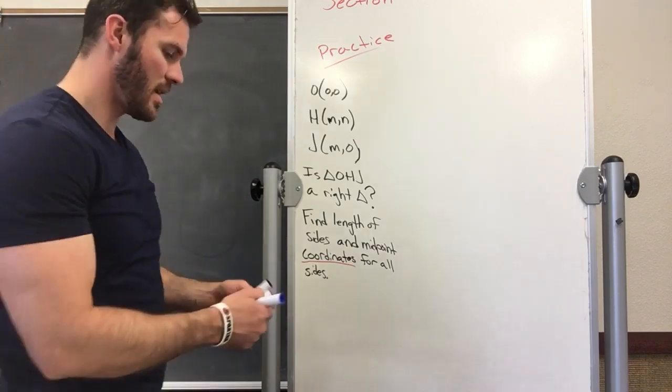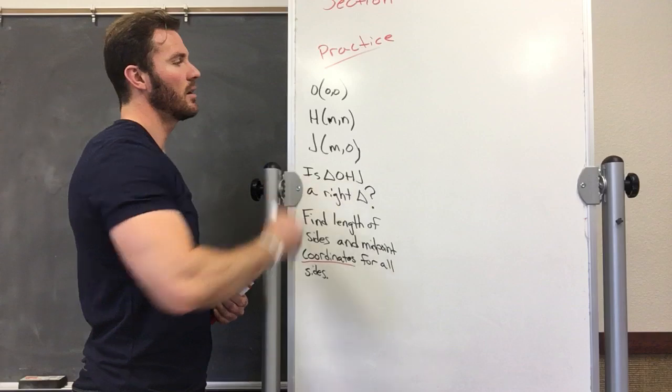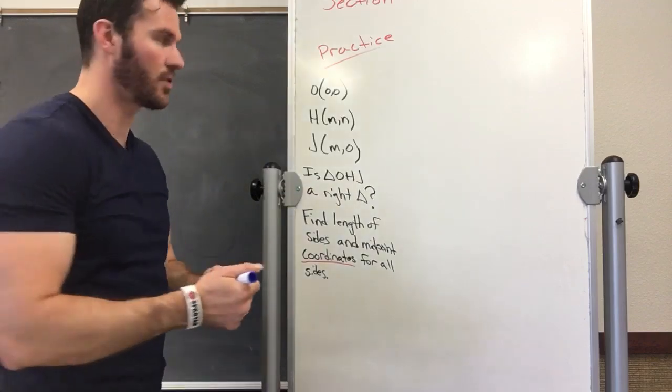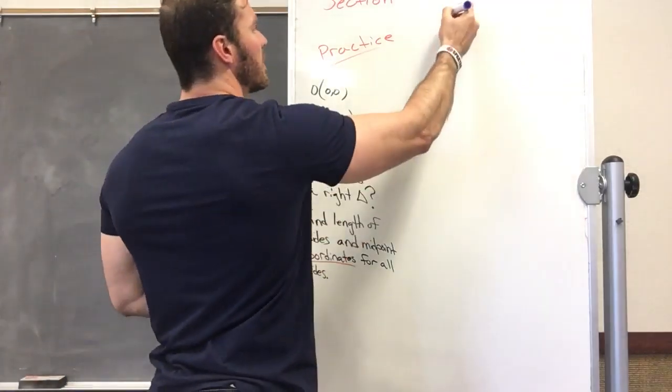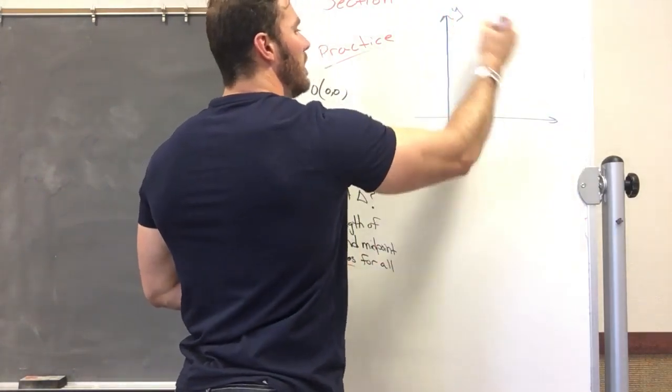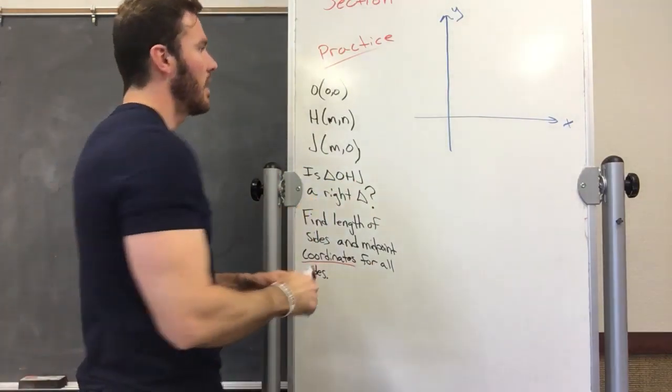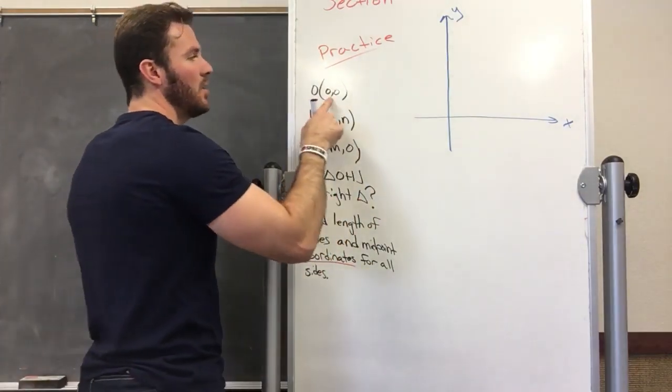Alright, so let's go ahead. It says to graph our triangle first. Let's draw our axes, Y and X, and then O is at the origin, at (0, 0).